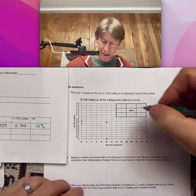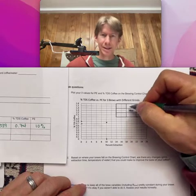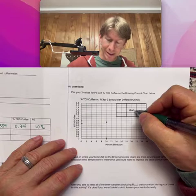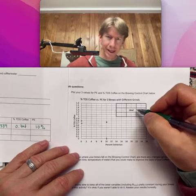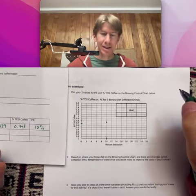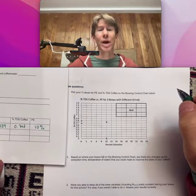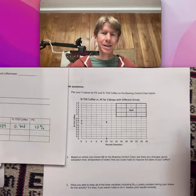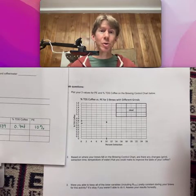And this box here is the brew control chart, where ideal is right in the center. And I want to get an idea of where I am. And unfortunately, I am way far away, which perhaps is not that surprising because the coffee was so coarsely ground.